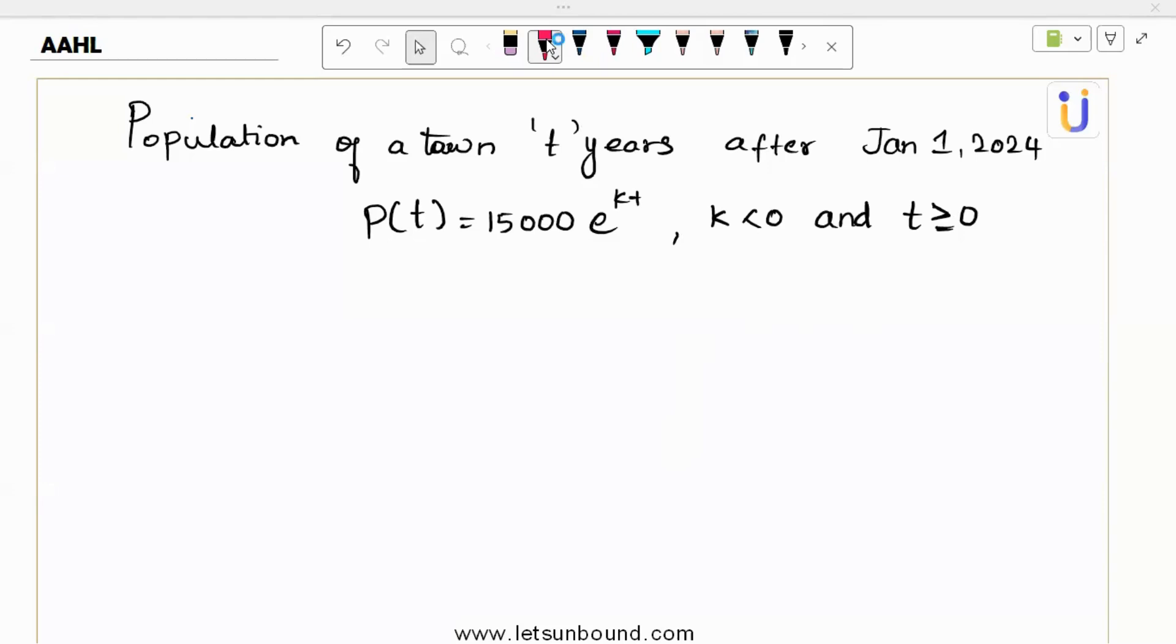And now we need to estimate using this model, what will be the population on Jan 1, 2041. So they give a model, but the problem is there are two unknowns here. I need to find what is this k constant.